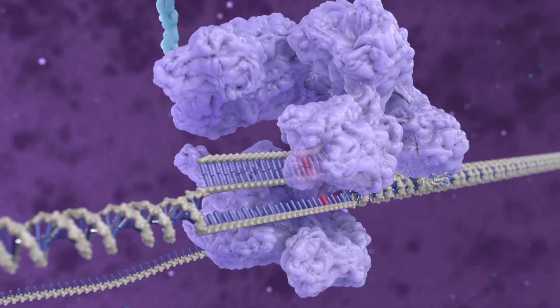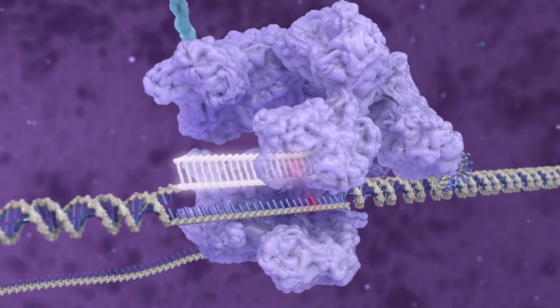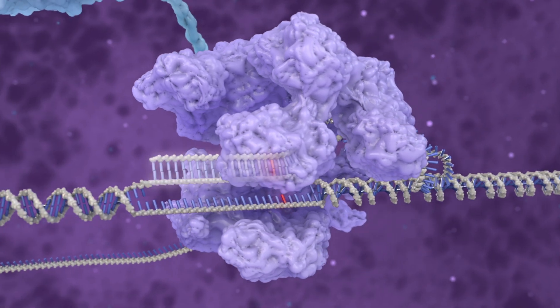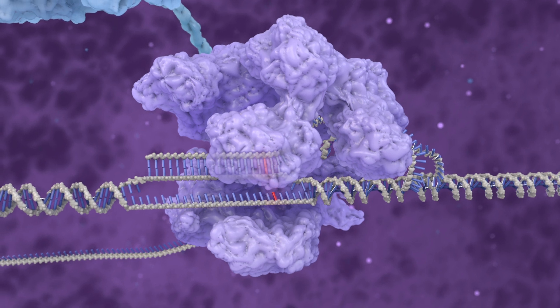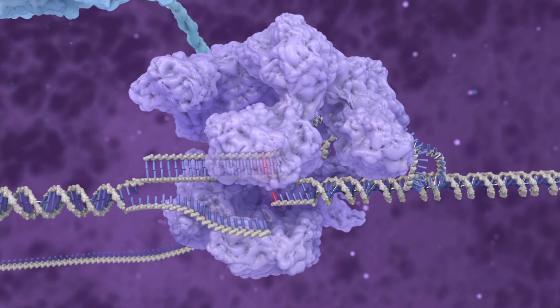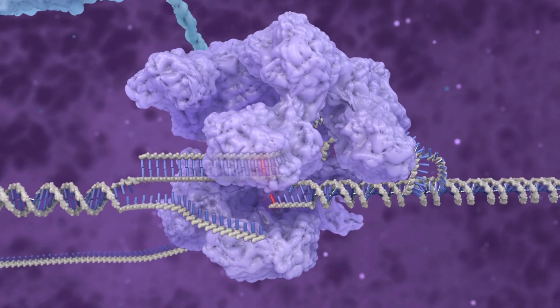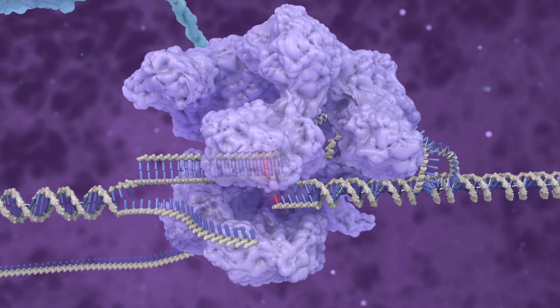Once the prime editor identifies the correct DNA sequence, the cas domain undergoes a conformational change that allows it to cut just one of the two strands of DNA, generating a nicked single-stranded piece of DNA.